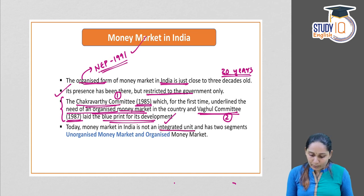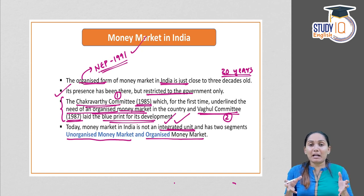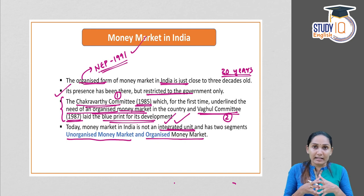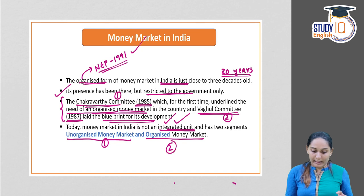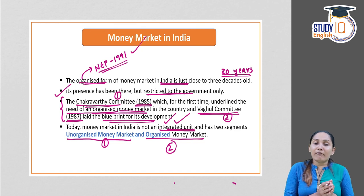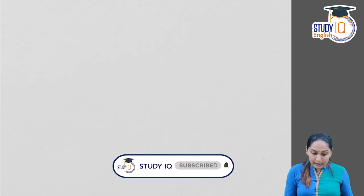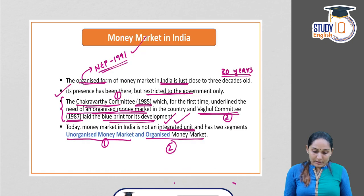Before that, the presence of money market was restricted to the government sector only. The Chakravarti Committee, set up in 1985, was the first committee to underline the need for an organized money market in the country. The Vagal Committee of 1987 laid the blueprint for its development. These are the two key committees in the history of money market in India.